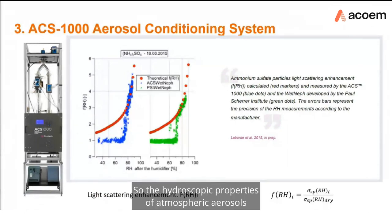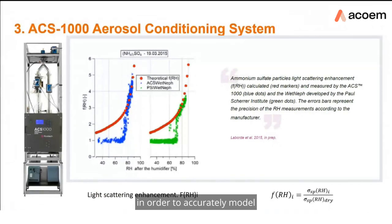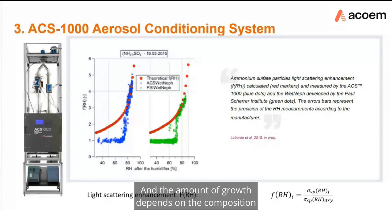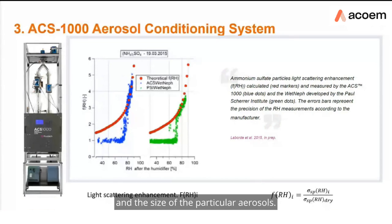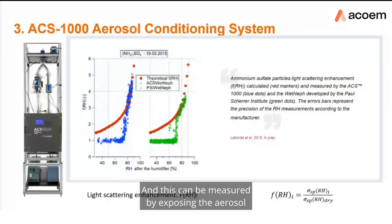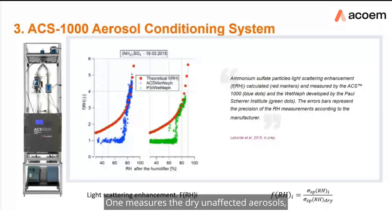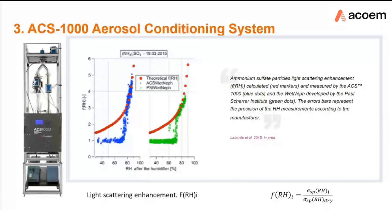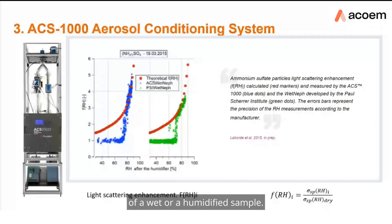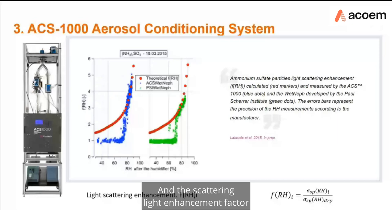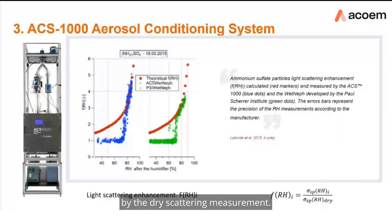The hygroscopic properties of atmospheric aerosols are an important parameter to assess in order to accurately model their effects on Earth's radiative balance. When certain aerosols are exposed to high humidity conditions, they appear to grow in size — and the amount of growth depends on the composition and size of those aerosols. This can be measured by exposing the aerosol to different levels of humidity and then measuring its scattering properties. The scattering light enhancement factor is obtained by dividing the wet scattering by the dry scattering measurement.